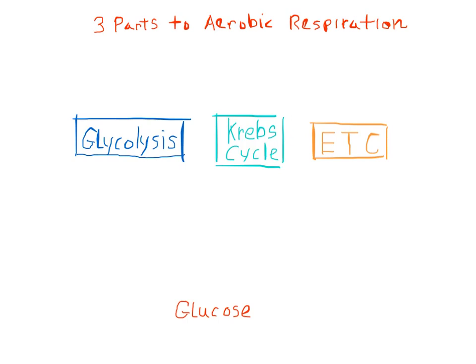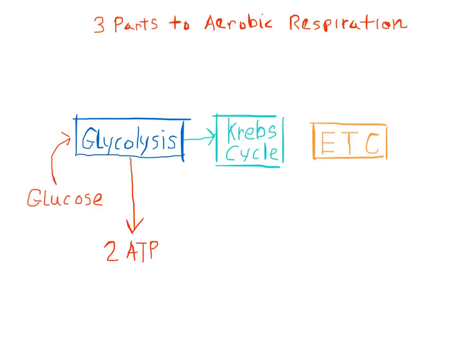We will begin our tour with a molecule of glucose that will be fed into glycolysis. From this, glycolysis produces two molecules of ATP from the oxidation of that glucose. The leftovers from glycolysis go to the Krebs cycle, where complex biochemical reactions produce another 2 ATP. And the leftovers from the Krebs cycle go to the electron transport chain, which through even more complicated chemical reactions produces 34 ATP.